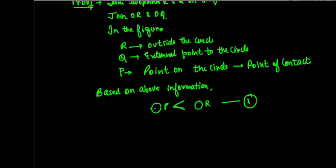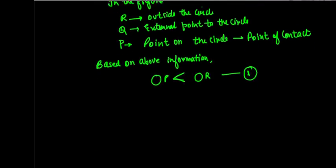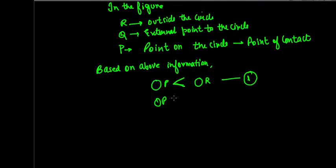The second thing to consider is OQ. Again, Q is an external point and P lies on the circle, therefore the distance OP is less than OQ. So we can say OP < OQ — relation 2.